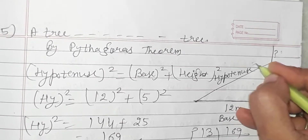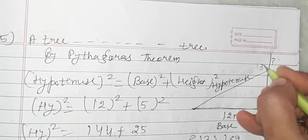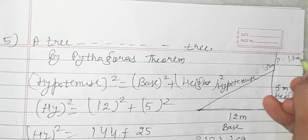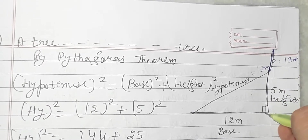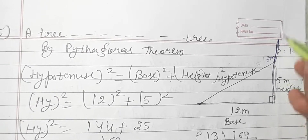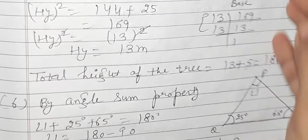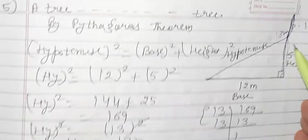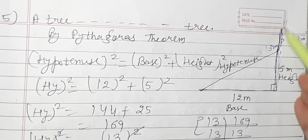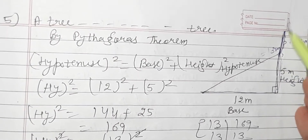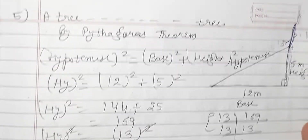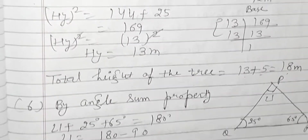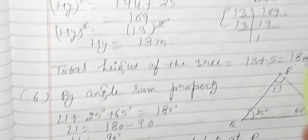The broken portion of the tree (hypotenuse) is 13 meters long. The standing part is 5 meters. So the total height of the tree is 13 + 5 = 18 meters.